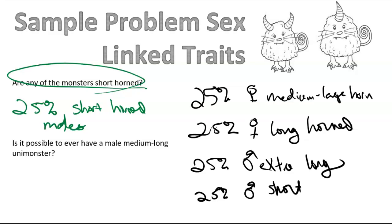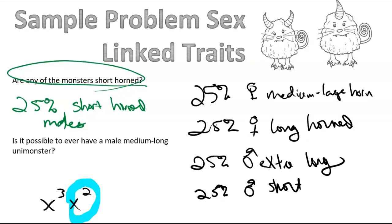Is it possible to ever have a male medium long-horned unimonsters? So that would require X superscript 3, X superscript 2. And that is impossible, right? Because the guy has to have a Y. So the only possible outcomes for males would be X with a superscript 3 Y, X superscript 2 with a Y, and X superscript 1 with a Y. So that tells us that medium-long is impossible.